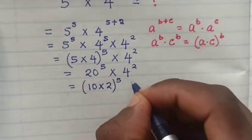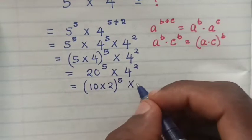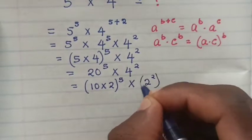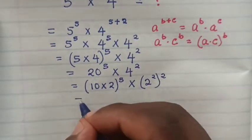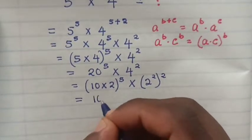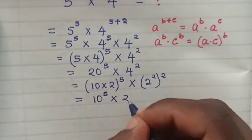And 20, we know 20 is 10 × 2, so it will be (10×2)^5. And 4 is the same as 2^2, so 4^2 will be (2^2)^2.